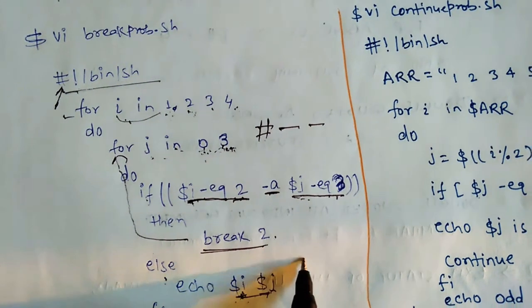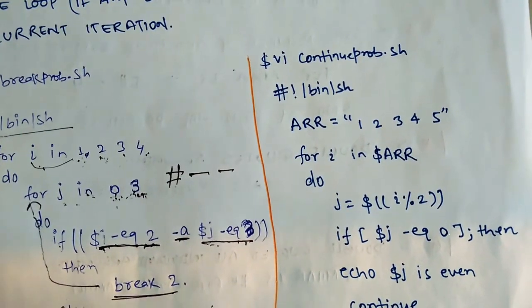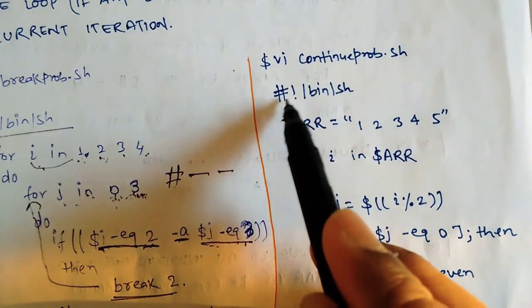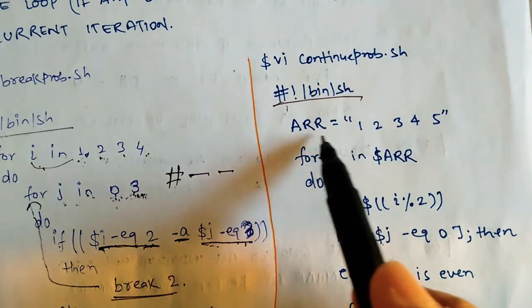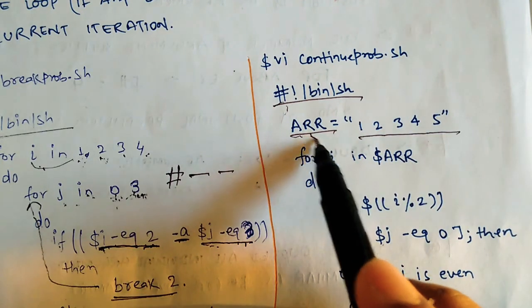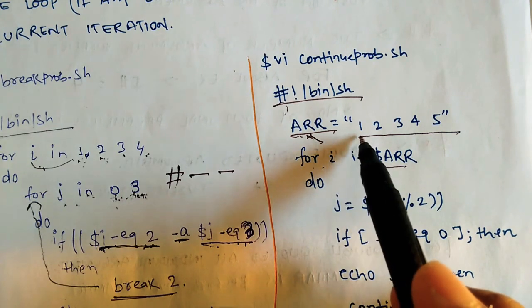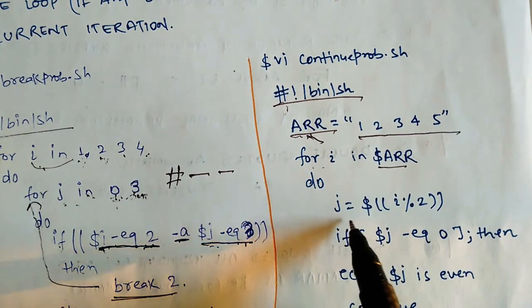So this is the way you can understand break statement. Now we will understand the concept of continue statement with proper example. Here you have one program. So once again this is the interpreter line. We have written a variable ARR in which we have assigned 1 2 3 4 5. So this is the array variable. For i in dollar ARR means i will take each variable of the array. Do j value, we are doing here i mod 2.